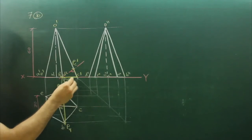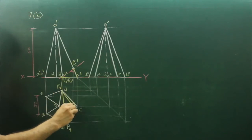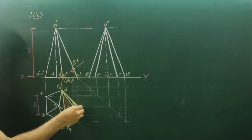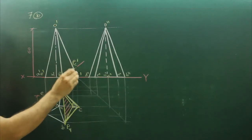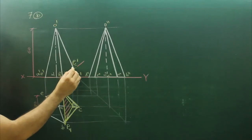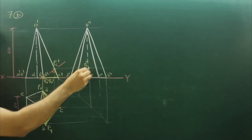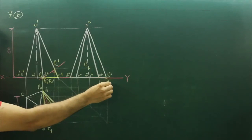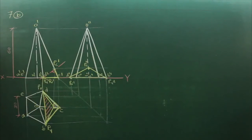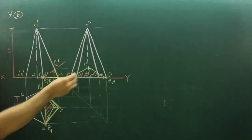So we got PU, PV. Extend this point down — PC-dash — wherever it cuts, that is PC. This part will be hatched, only this much portion remains below, and the entire upper portion will go away. For the side view, extend PC-dash horizontally; wherever it cuts gives PC double-dash. Same way extend PU and PV to get PU double-dash and PV double-dash. Only this much portion will be hatched and this much will be the remaining portion.